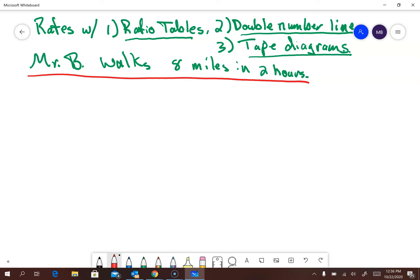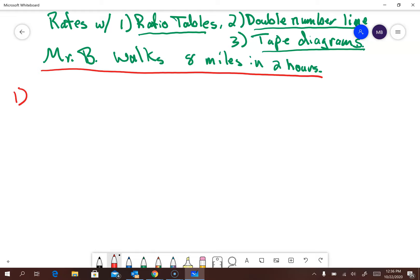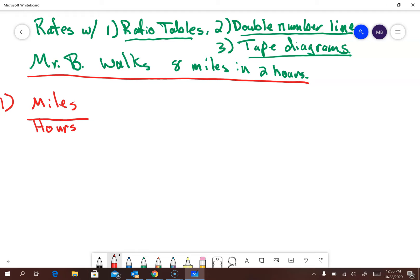And we can use that as the basis for all of those. So the ratio table is going to look like, I'm going to say miles and hours. And we've been using these a lot since second, third grade I'm thinking. So he walks how many miles? He walks eight miles in two hours.